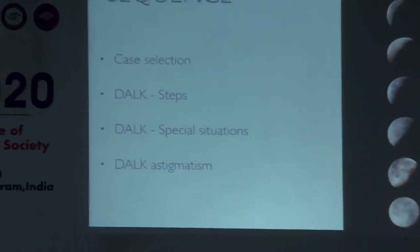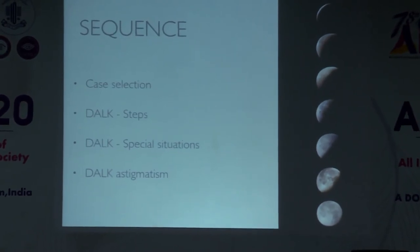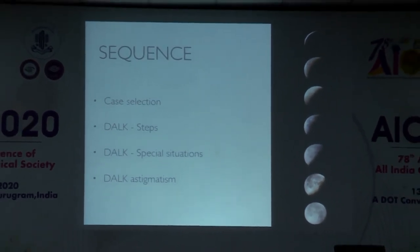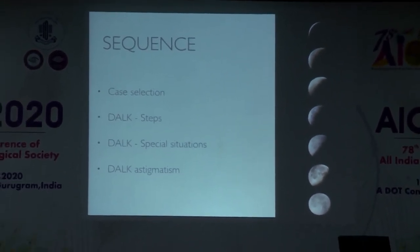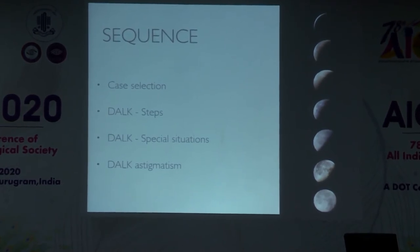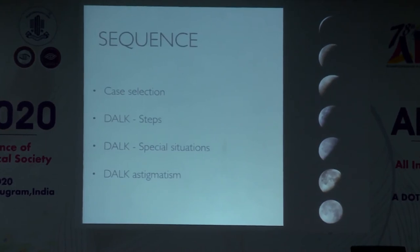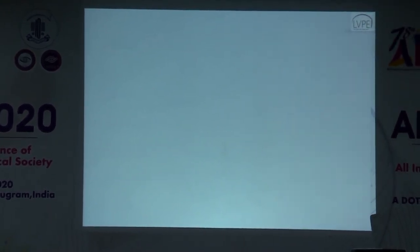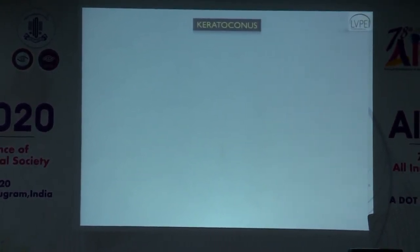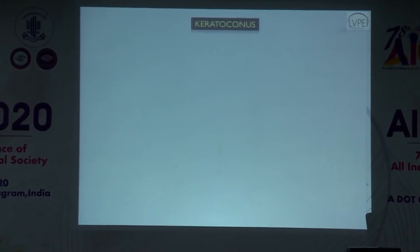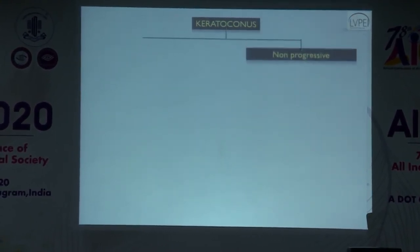The DALK presentation is divided into four segments: case selection for DALK in keratoconus, steps of DALK surgery, special situations in DALK and keratoconus, and management of post-DALK astigmatism. The algorithm: distinguish progressive from non-progressive keratoconus. If non-progressive with good vision using glasses or contact lenses, prescribe those. If stable and suitable, consider a phakic IOL. Advanced keratoconus where none of these work is when you proceed to PK or DALK.